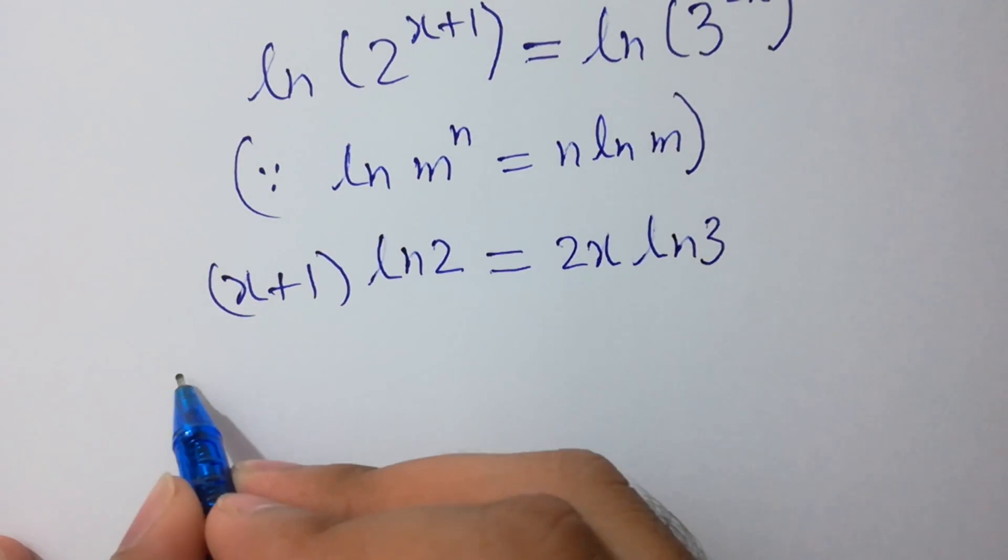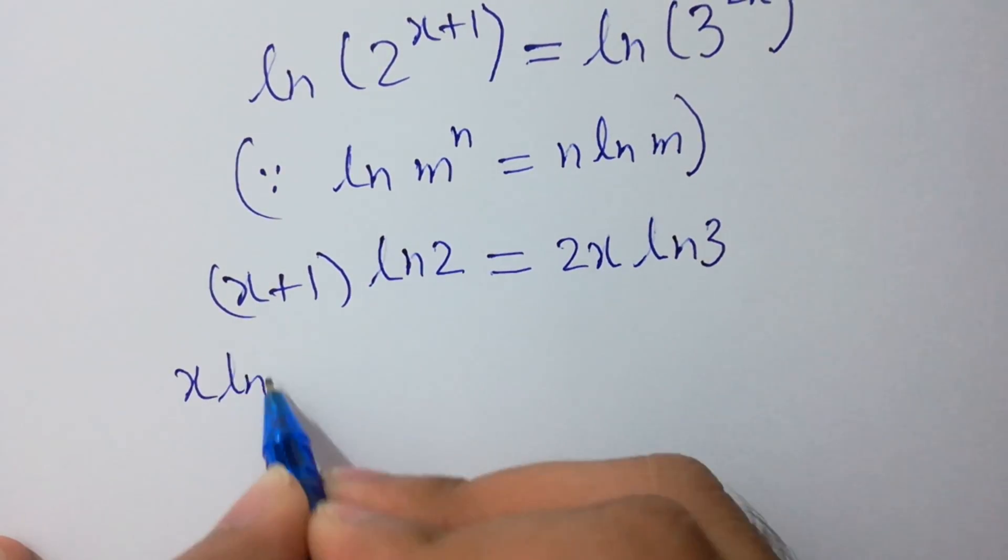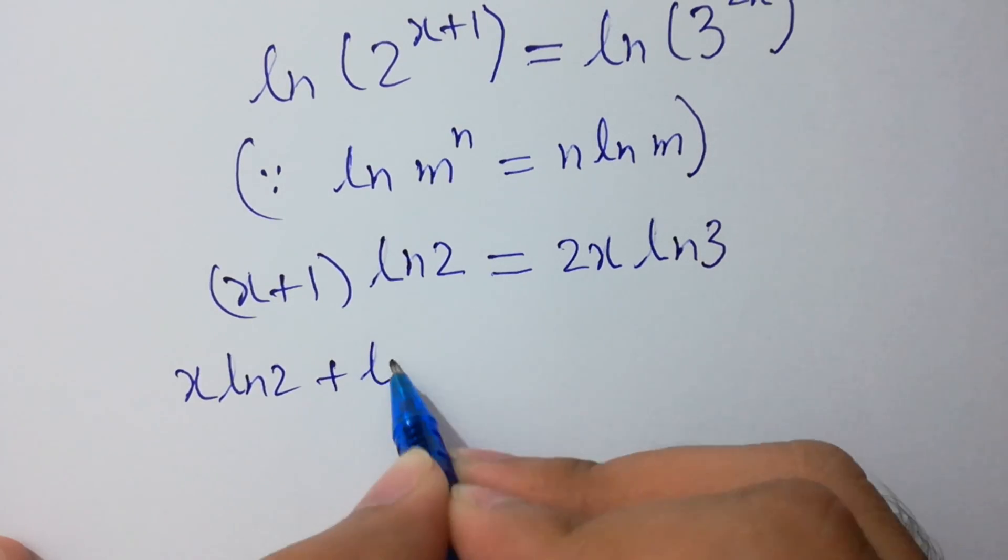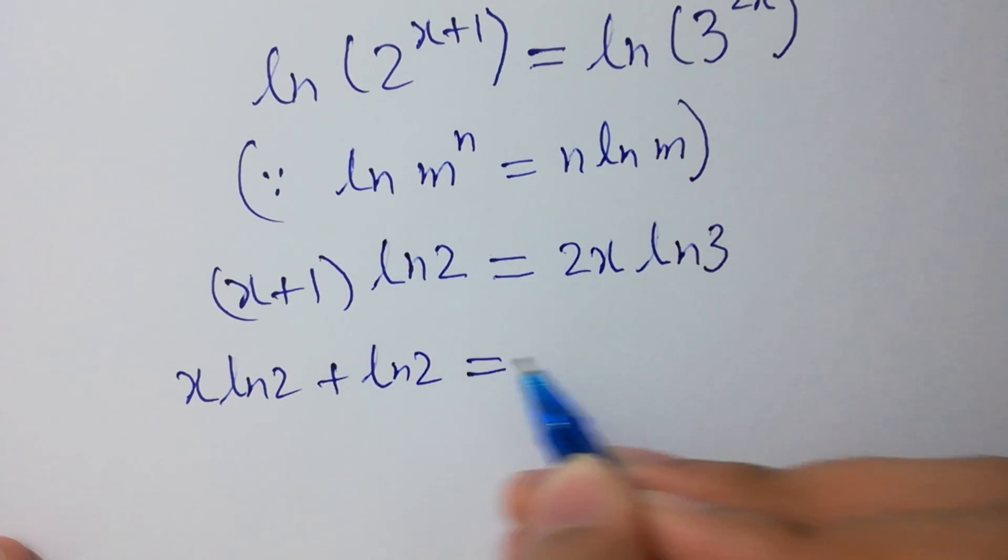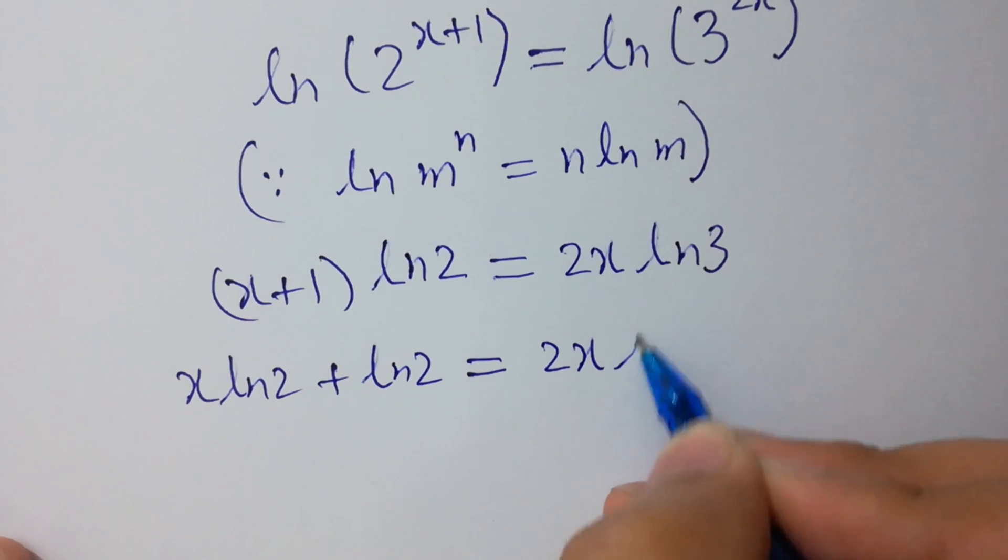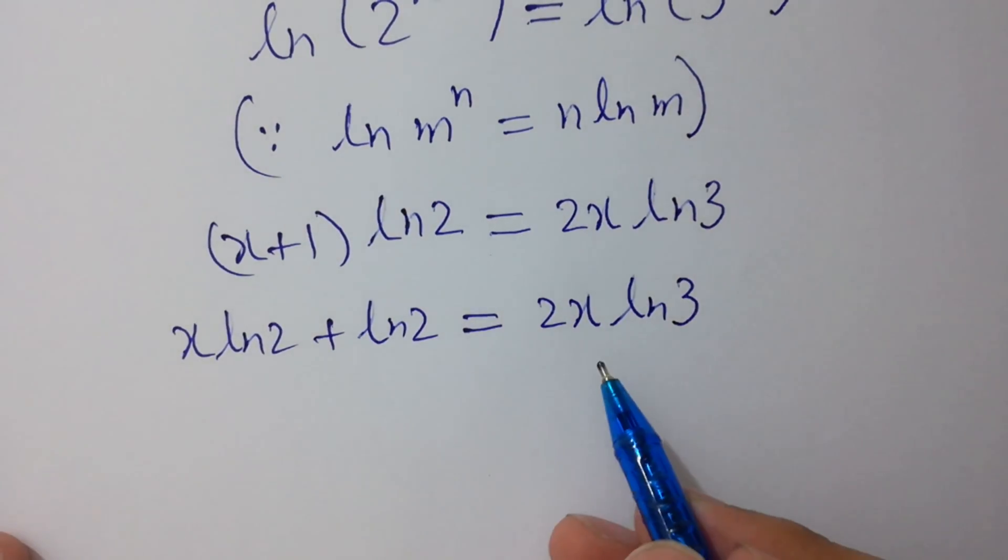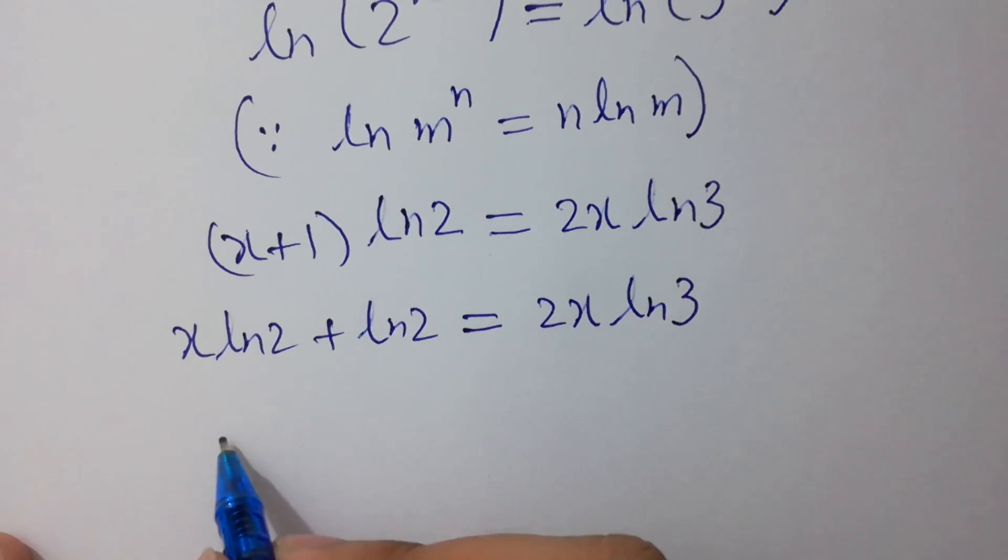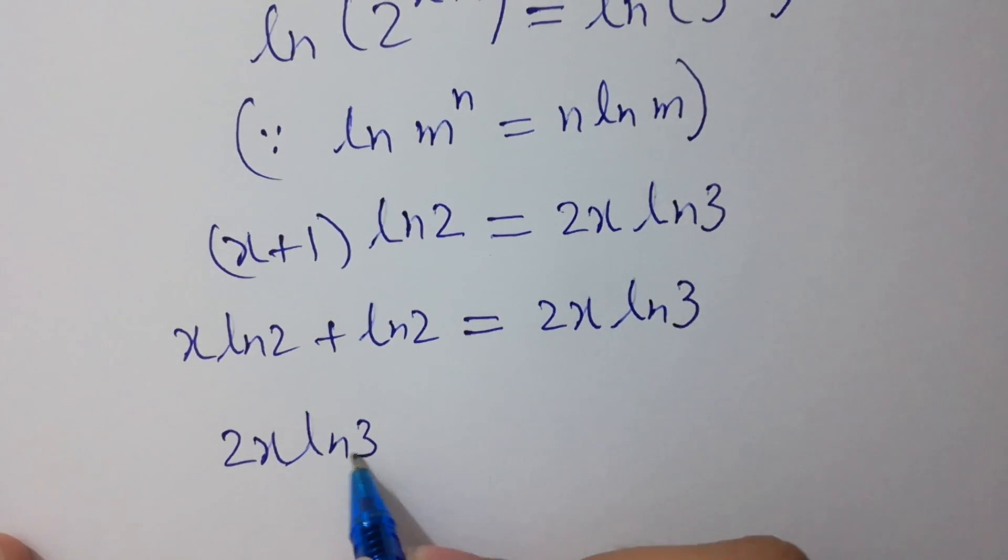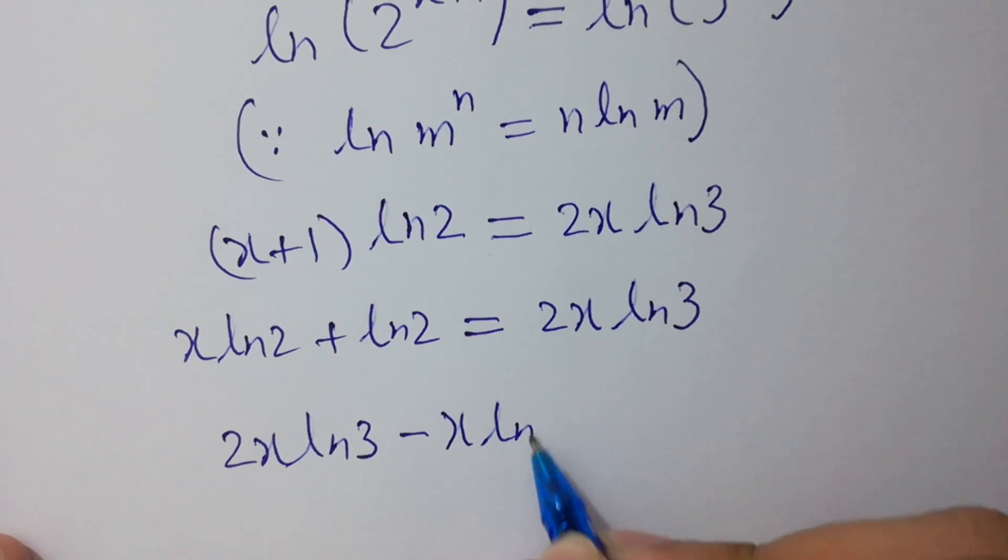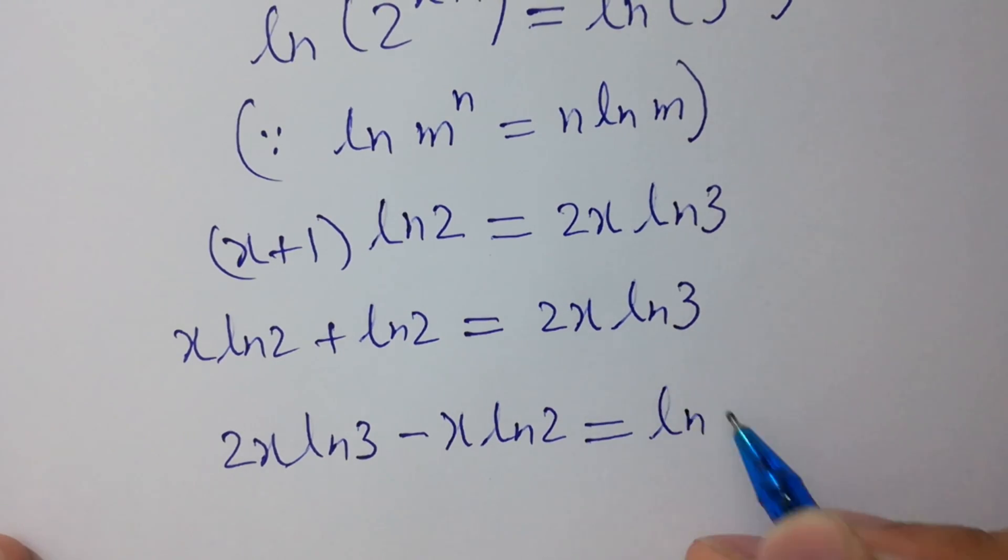x log 2 plus log 2 equals 2x log 3. So here 2x log 3 minus x log 2 equals log 2.